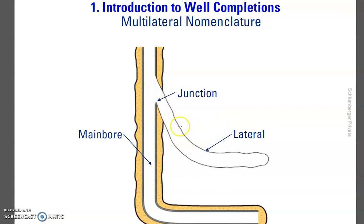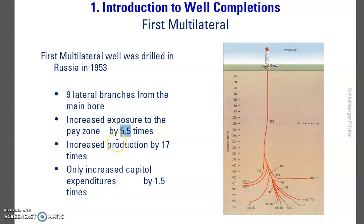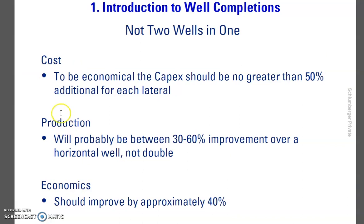This is the second well, called the lateral well, drilled from the main wellbore. They can drill another one here and another one here to reach different targets. The first multilateral well was drilled in Russia in 1953 and had nine branches from the main wellbore. It increased exposure to the pay zone by 5.5 times, increased production by 17 times, and capital expenses decreased by 1.5 times per well.